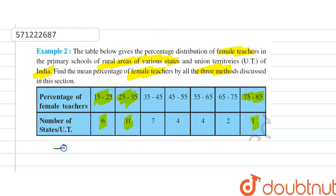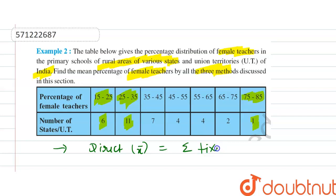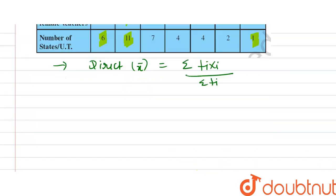First, the direct method: X̄ is equal to the summation of FI×XI divided by the summation of FI. This is how we find the mean by the direct method.